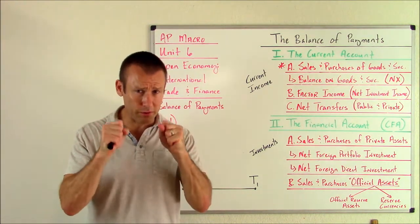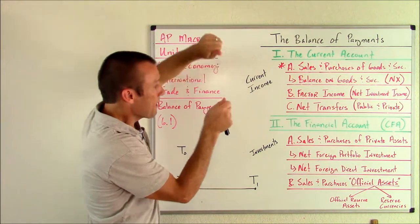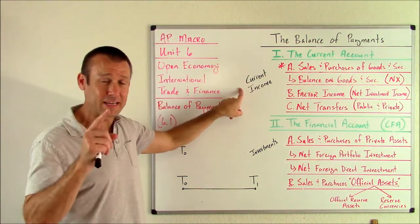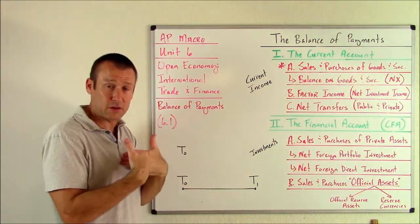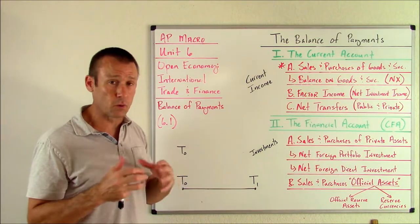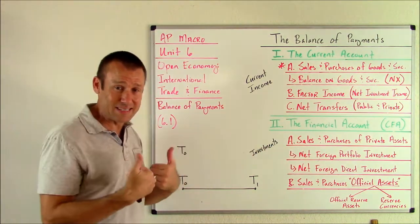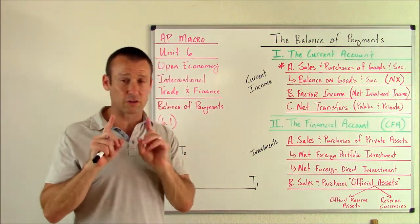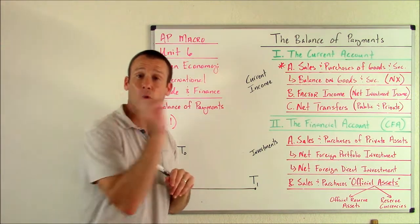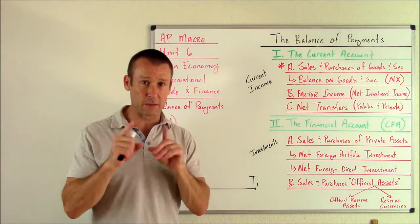When we record these international transactions, we want to categorize them. There are two major accounts we put these transactions into. One is the current account, which represents current income — a country receiving current income or providing others current income. The other is the financial account, where we record investments — investments by a country abroad or when the rest of the world wants to invest inside that country. In all of these accounts, money is flowing both ways: transactions where money flows out and transactions where money flows in.